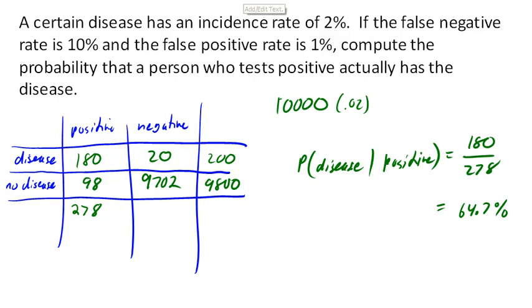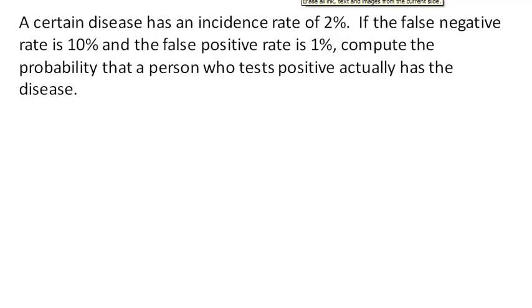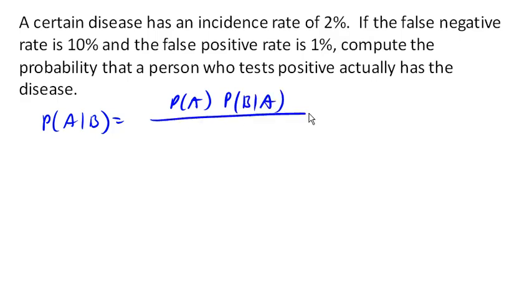So Bayes' rule says that the probability of A given B is the probability of A times the probability of B given A over the probability of A times the probability of B given A plus the probability of A complement times the probability of B given A complement.